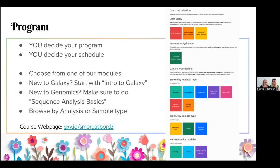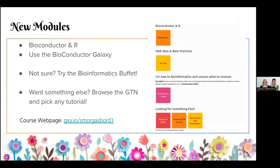The course webpage can be found at the short link gxy.io/smorgasbord3. We also have some new modules this year. One of them is Bioconductor and R — a set of tutorials outside of the GTN that use R inside Galaxy, contributed by the Bioconductor team. If you are interested in bioinformatics with R, please check those out. There's a special Bioconductor Galaxy you'll use for these tutorials, and you'll find all the details in the welcome video for that module. We also have a new Fair Data and Best Practices section, with tutorials about RO Crates — research object crates. If you're interested, please check out that module.